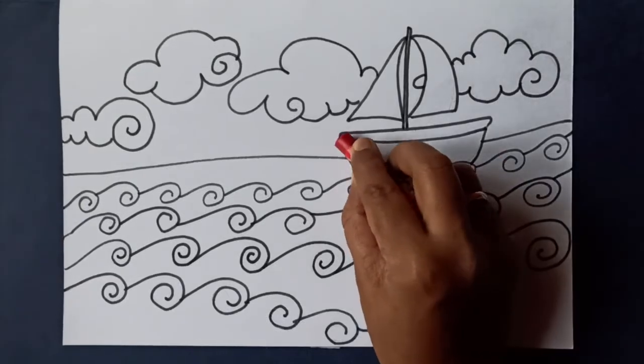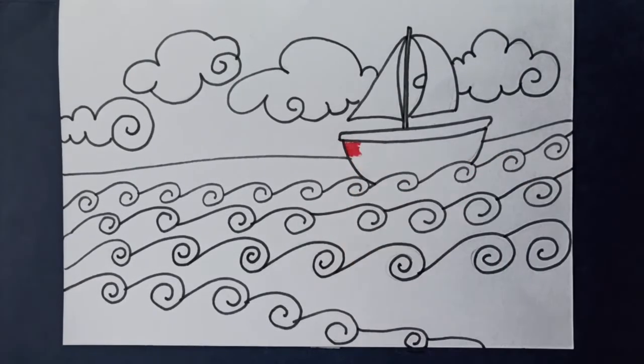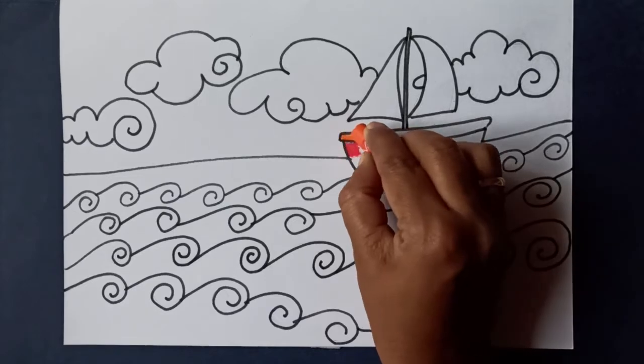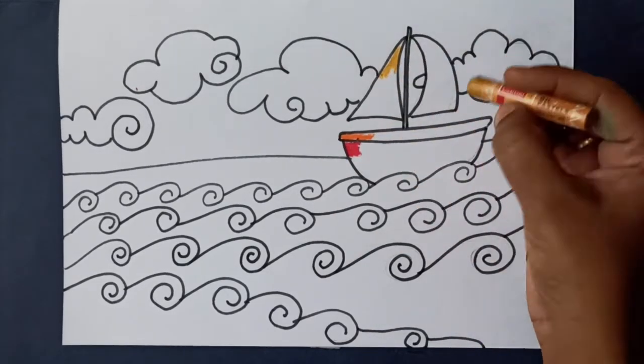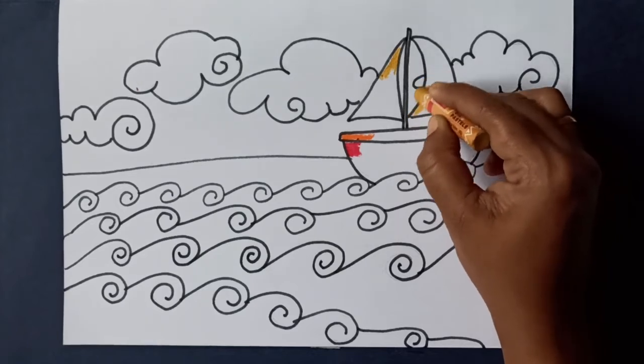Let's color the picture now. Add red and orange for the boat. Add yellow ochre for the sail cloth.